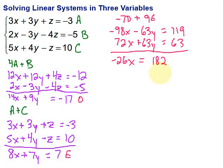Notice what we have. We have one equation with one variable. Perfect. Now we can solve for that variable. So let's just take this equation. We'll divide by negative 26 on both sides. And when we do that, we end up with x being equal to 7. So now we've got one of our variables solved for.